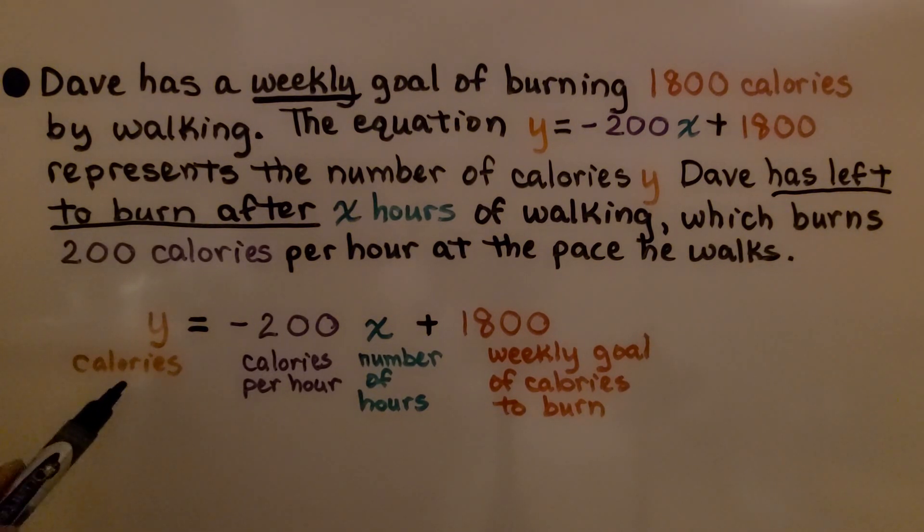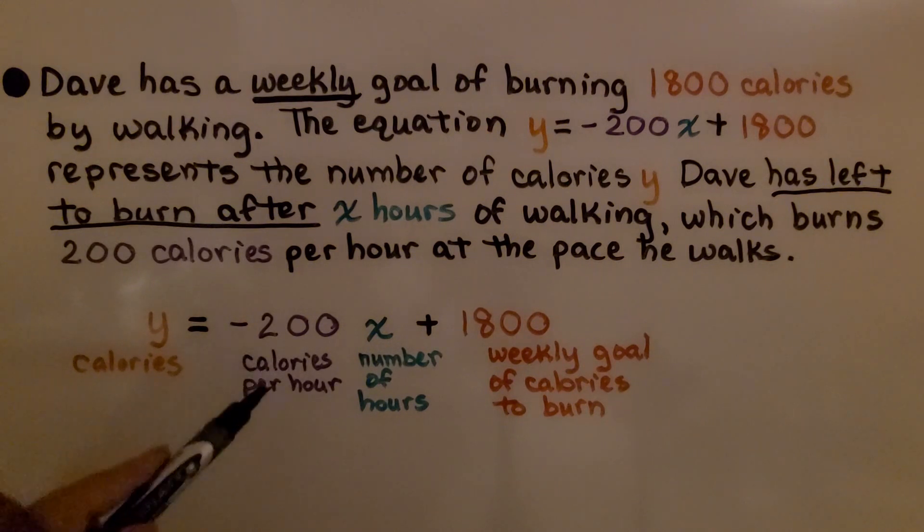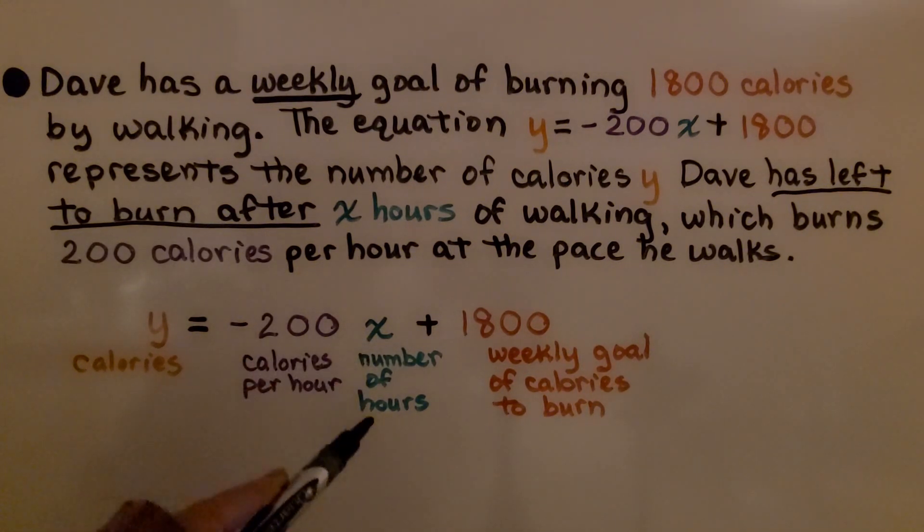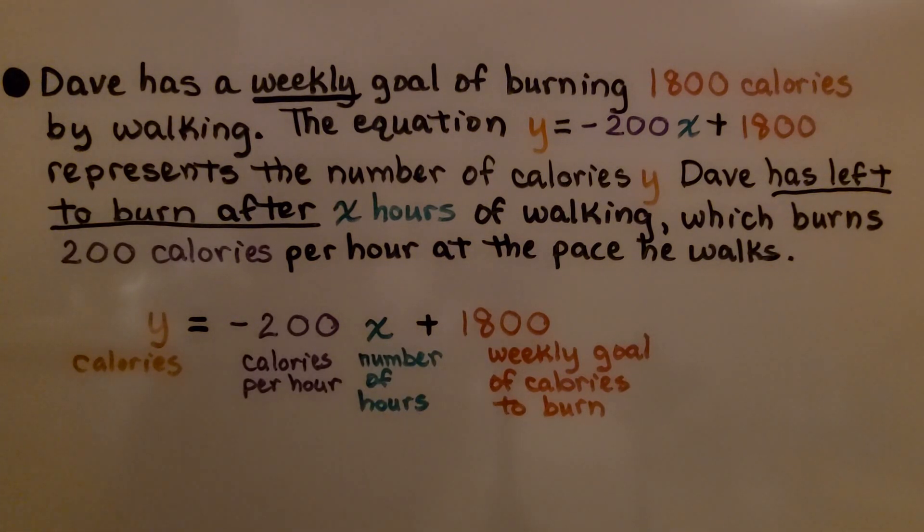We have y, which is the total number of calories. We have -200, that's the calories per hour that are burned. We have x, that's the number of hours he's going to walk, and we have 1,800, which is his weekly goal of calories to burn.